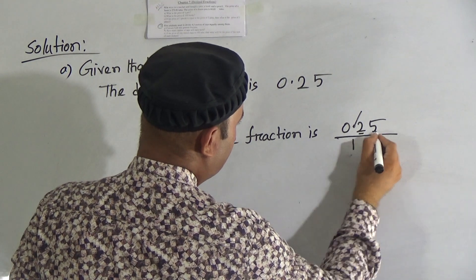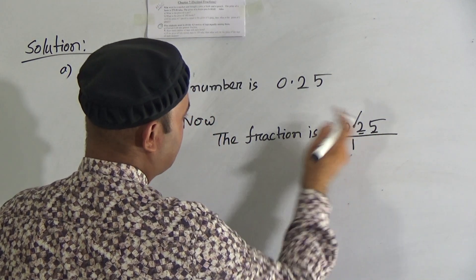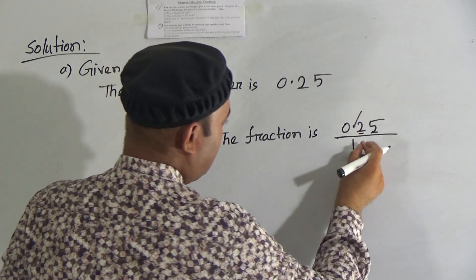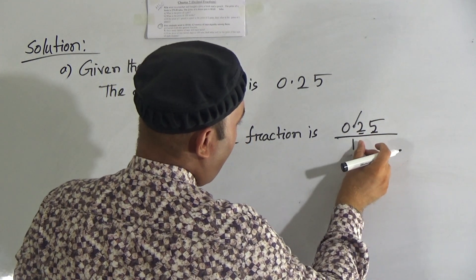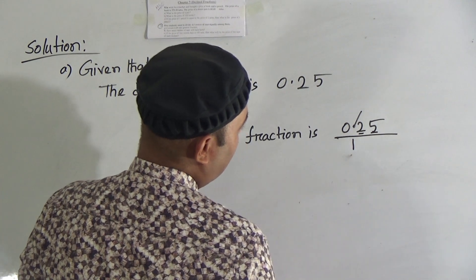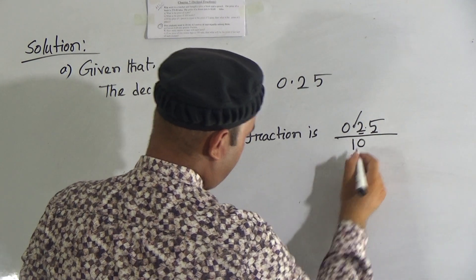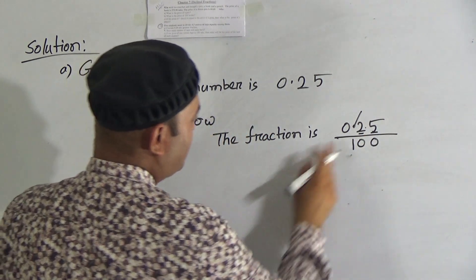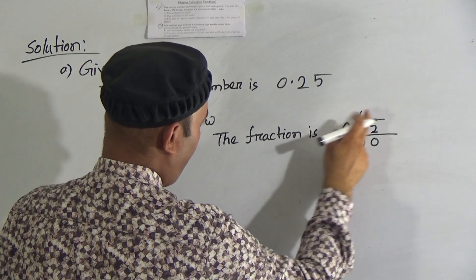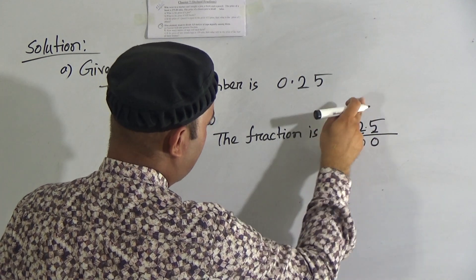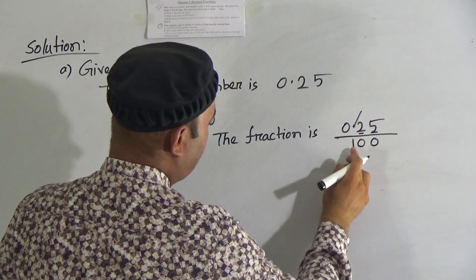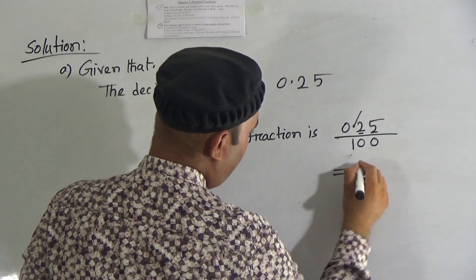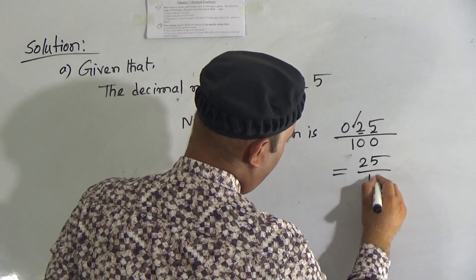Here there are 2 digits after the decimal point. For each digit, we will use one zero at the denominator place. Here is 2 — for 1 digit, here is 0; for 5 — for 1 digit, here is 0. So we can write 0.25 after removing the decimal point as 25 divided by 100. So it will be 25 divided by 100.